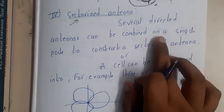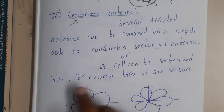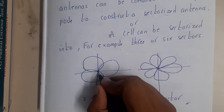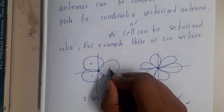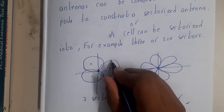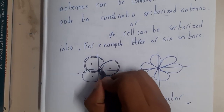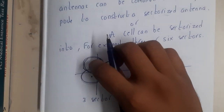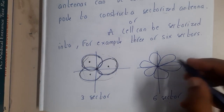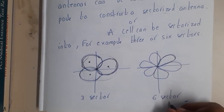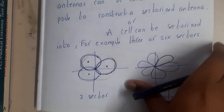Several directed antennas can be combined on a single pole to construct a sectorized antenna. A cell can be sectorized into, for example, three or six sectors. Here the antenna is sending the signal and sectorizing the whole signal across the area — one antenna covers one sector, another covers the next, and so on. Using the three-sector concept we are able to cover the full area and send data. The same process can also be done using six sectors, which will look like a flower. This type of dividing into sectors comes under the sectorized antenna.